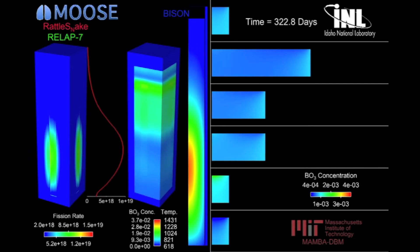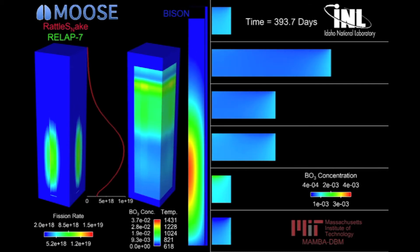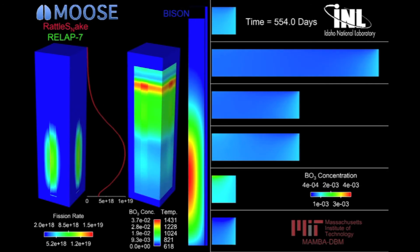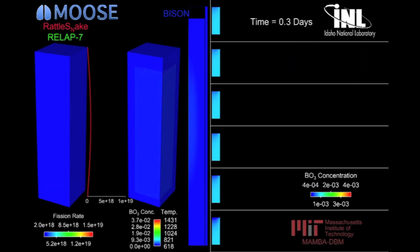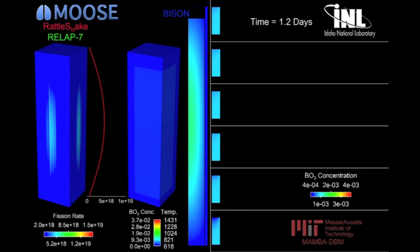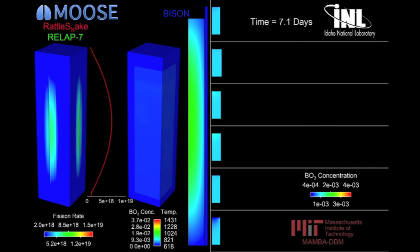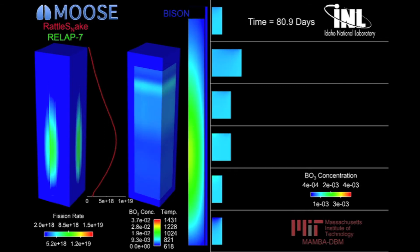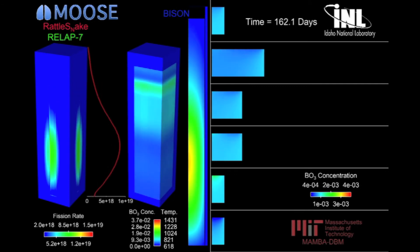You can see how as the deposits build up on the outside of the fuel rod, the power shifts towards the bottom of the reactor. What this causes is local hot spotting, efficiency loss within the reactor — it's a significant operating problem.